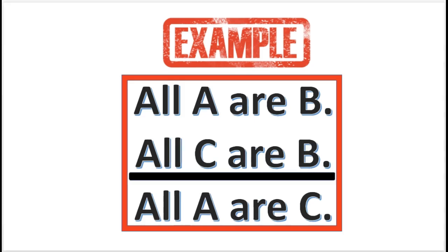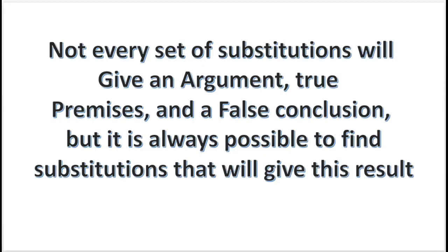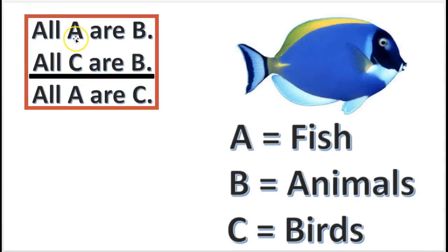Here's an example of an argument form — this argument form is invalid. Not every set of substitutions will give an argument true premises and a false conclusion, but it's always possible to find substitutions that will give this result. Now, if we take this argument form and substitute these letters for terms — everywhere there's an A, we put fish; everywhere there's a B, we put animals; everywhere there's a C, we put birds.